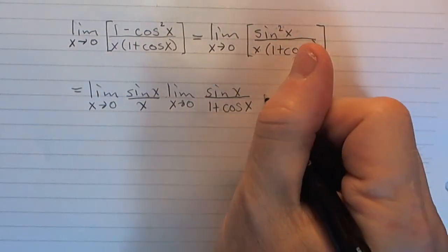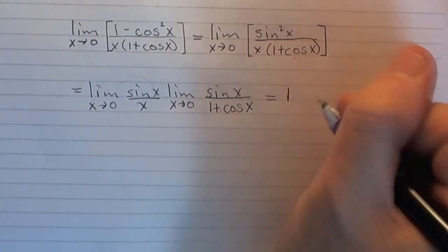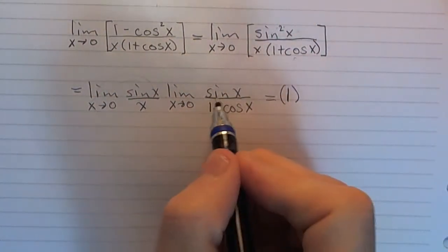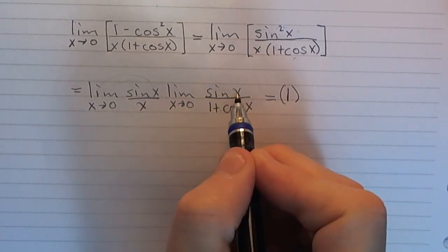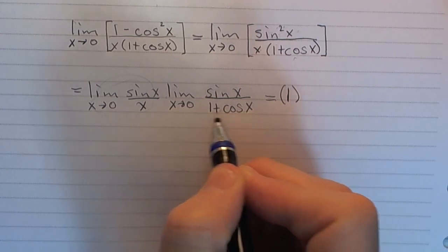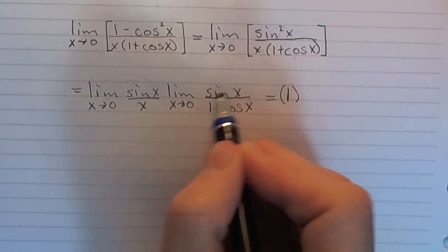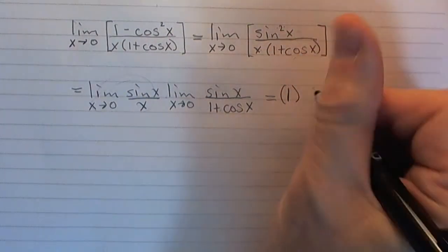But let's evaluate these limits. Now, this limit right here is 1. But this limit, notice, if I put a 0 in here, I get a 0. If I put a 0 down here, I get 1 plus 1, right? So I get 0 over 2, which is 0.